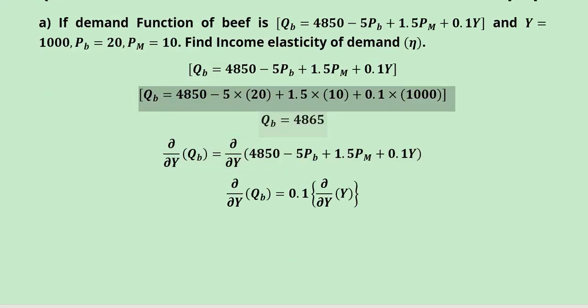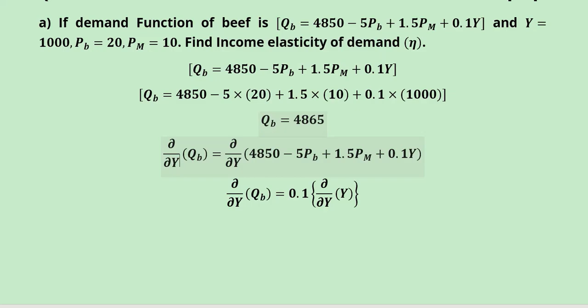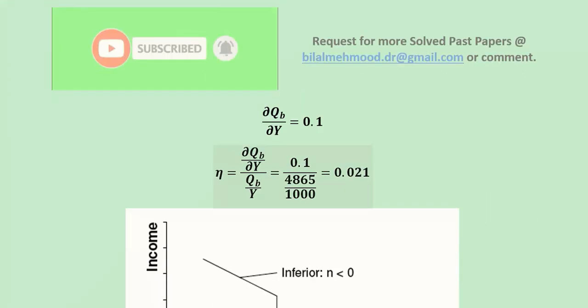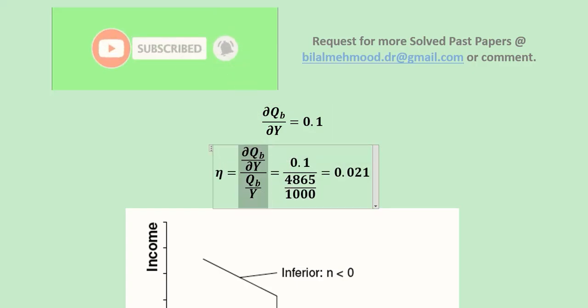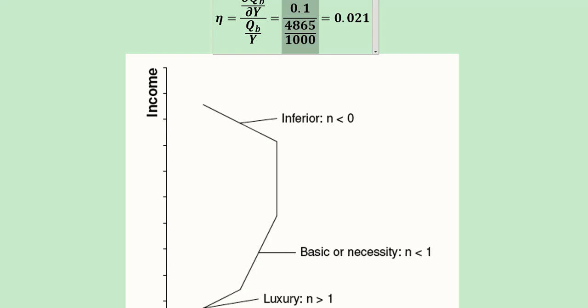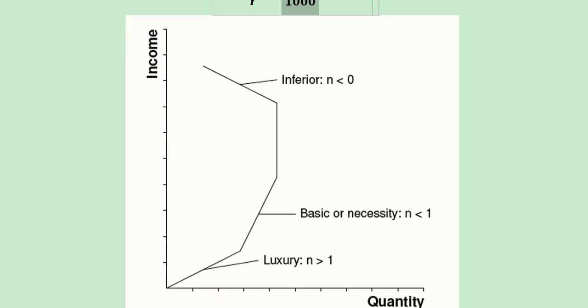Then we take the derivative, because we are interested in the income elasticity of demand. So we will need the derivative of the demand function with respect to income, and we will also need the value of QB and Y. The derivative is found here. Once we have this, we can divide it by the average function with respect to income, that is the demand function. This is the formula of elasticity with respect to income. Substituting and simplifying, we get this answer. It is less than 1 and greater than 0, showing that eta is less than 1. So we can say that we are dealing with some kind of necessity or basic needs.